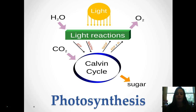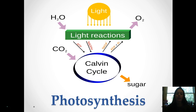Hey guys, here are your photosynthesis video notes. We're going to outline the process here and you'll have a couple of great illustrations to help you as well. First of all, we know that light is required for photosynthesis, and it goes into something called the Calvin cycle, where we ultimately produce sugar in the form of glucose.